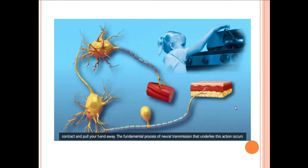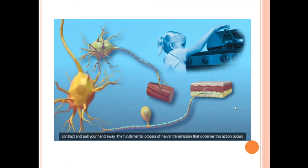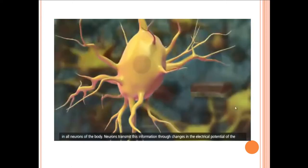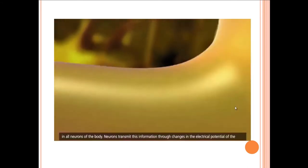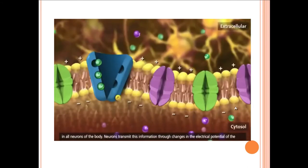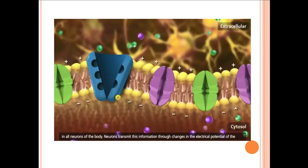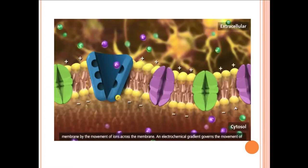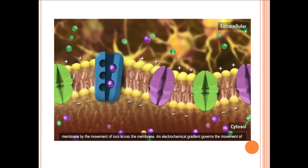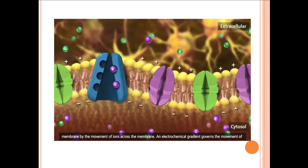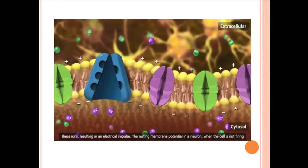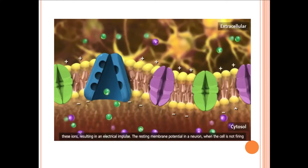The fundamental process of neural transmission that underlies this action occurs in all neurons of the body. Neurons transmit this information through changes in the electrical potential of the membrane by the movement of ions across the membrane. An electrochemical gradient governs the movement of these ions, resulting in an electrical impulse.